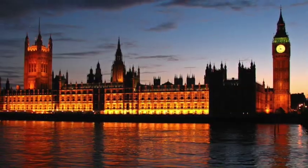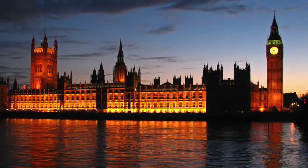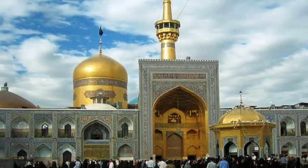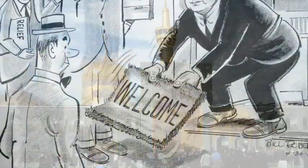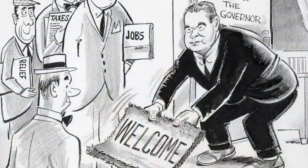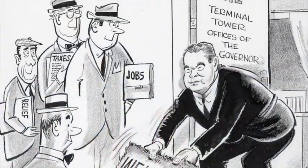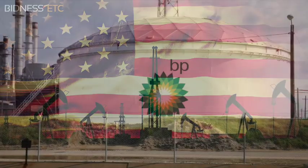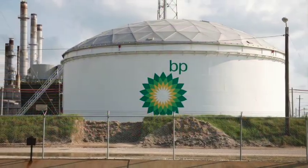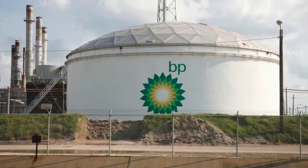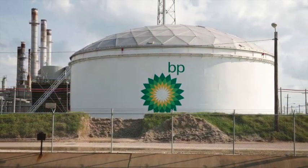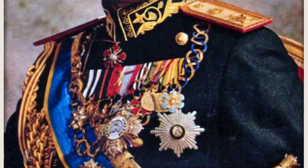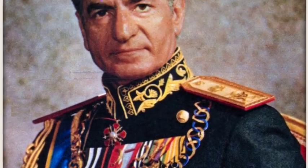In 1935, England invaded Iran and established an indirect imperial control over Iran. American oil companies and British Petroleum, an English gasoline company, contracted a deal with Reza Shah Pahlavi, the ruler of Iran at the time.